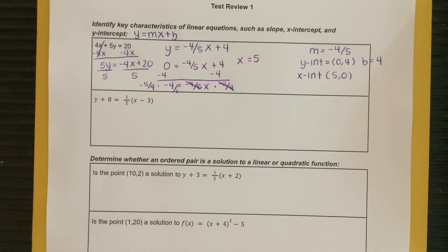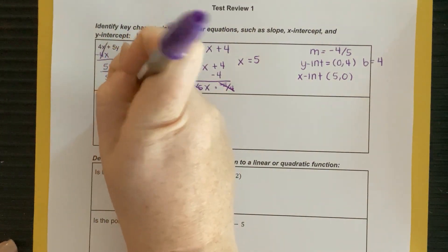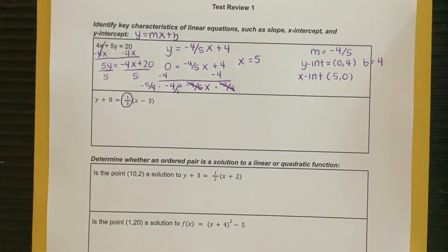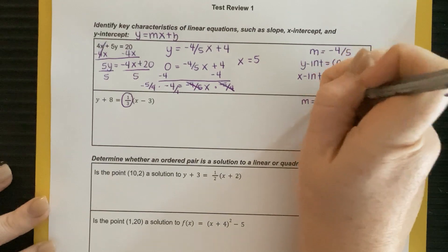That next one's in point slope form. So this next one's automatically telling us what our slope is right off the bat. So our slope is that 1 third. All right? So my m value is going to be 1 third.